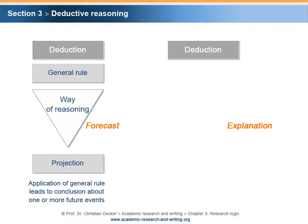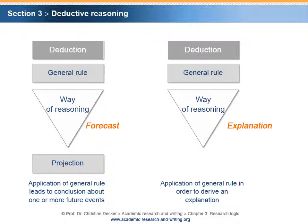For an explanation, a general rule will be applied in order to derive an explanation. Again, the starting point is the general rule which will be used in order to come up with a conclusion.